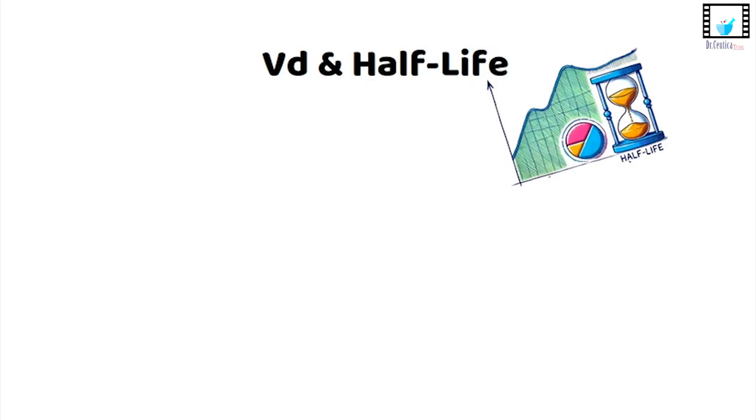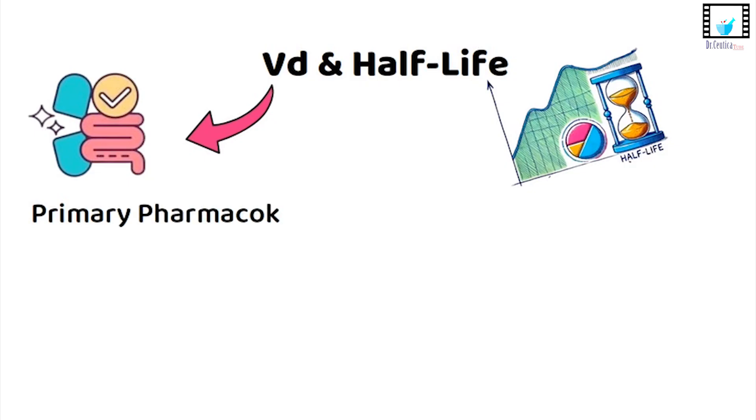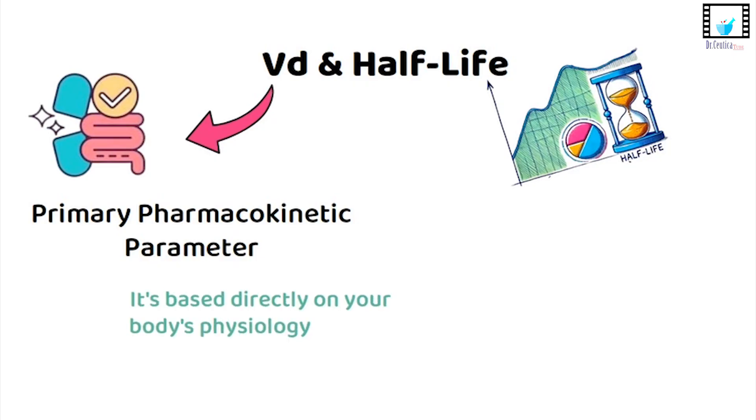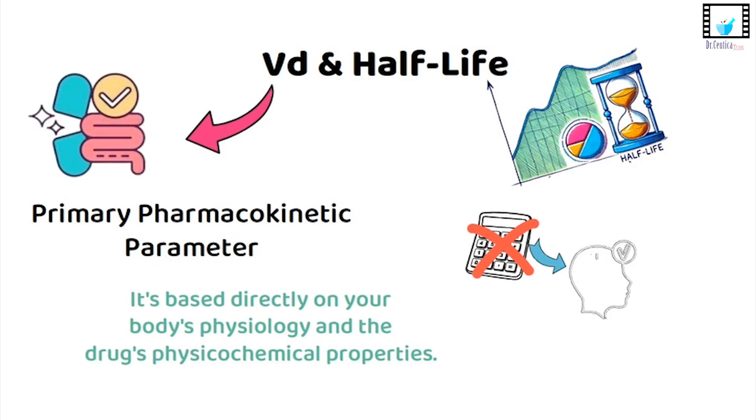In a previous video, we talked about half-life. And VD plays a big role in half-life because VD isn't just a number. It's what we call a primary pharmacokinetic parameter. That means it's based directly on your body's physiology and the drug's physical chemical properties. VD isn't calculated from other PK or pharmacokinetic values. Instead, it helps us predict them.